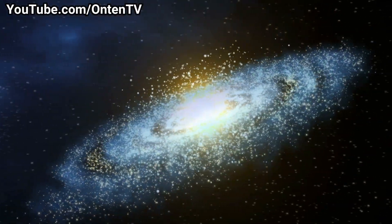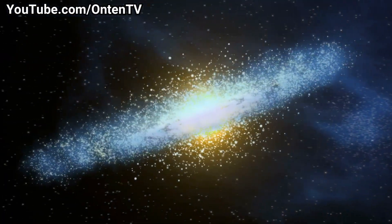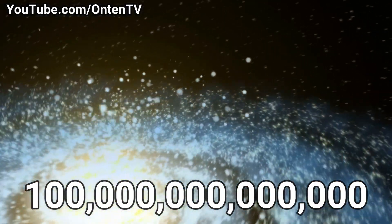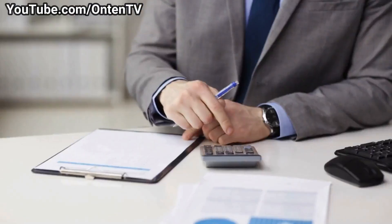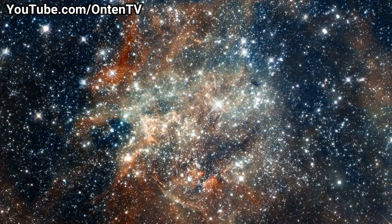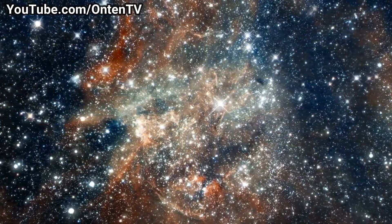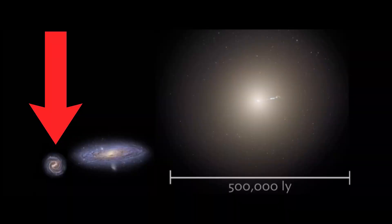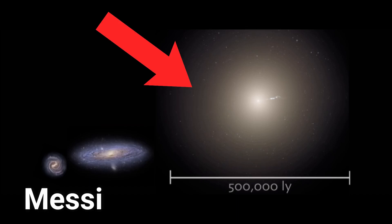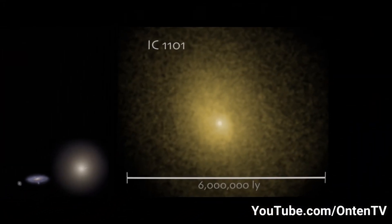Remember the Milky Way was 100,000 light years across — IC 1101 is 60 times bigger than the Milky Way. There are more than 100 trillion stars in this galaxy. To compare scale: the small one is the Milky Way galaxy, the next is the Andromeda galaxy, the third is Messier 87 — and that itself is a giant — but then there's IC 1101.